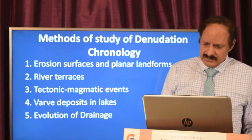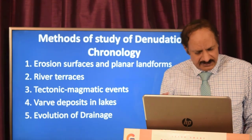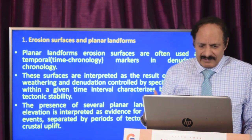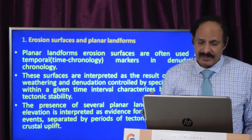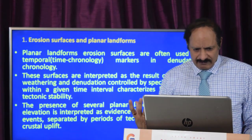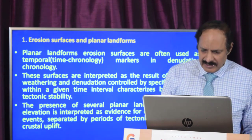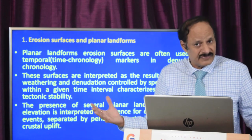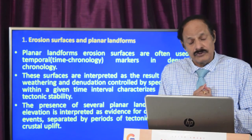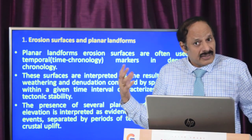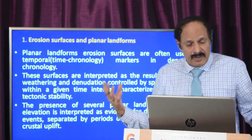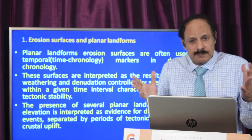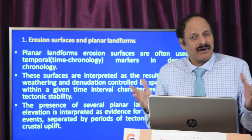Coming to the methods of denudation chronology: first is erosion/planar surfaces; then river terraces; tectonomagmatic events; varve deposits; and evolution of drainage. Planar landform erosion surfaces are often used as temporal — that is, time chronology — markers in denudation chronology. These surfaces are interpreted as a result of long-term weathering and denudation controlled by a specific base level within a given time interval, characteristic of long tectonic stability. It is only when there is tectonic stability that you find these erosion surfaces.